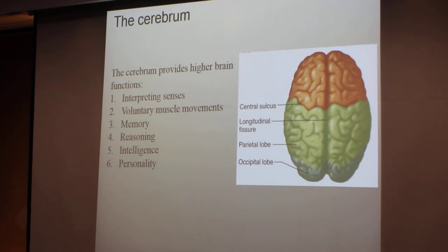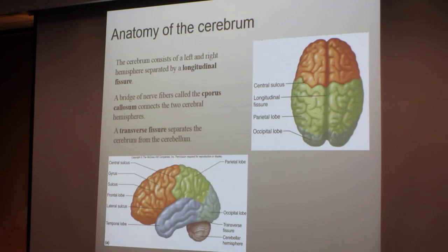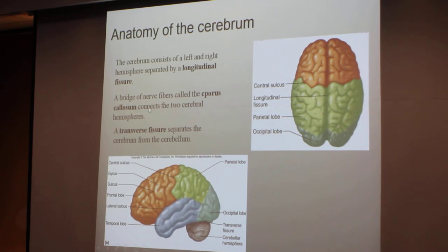The cerebrum provides higher brain functions: interpreting senses, voluntary muscle movement, memory, reasoning, intelligence, and personality. The anatomy of the cerebrum consists of left and right hemispheres, separated by a fissure. The bridge between the hemispheres — the fiber called the corpus callosum — connects the two cerebral hemispheres.